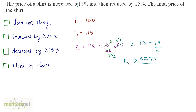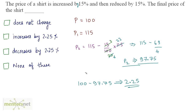The final price is 97.75. It has decreased from the base price of 100. The decrease is 100 minus 97.75, which gives 2.25. Since the base price was taken as 100, there is a decrease in price by 2.25%. That's our answer, option C.